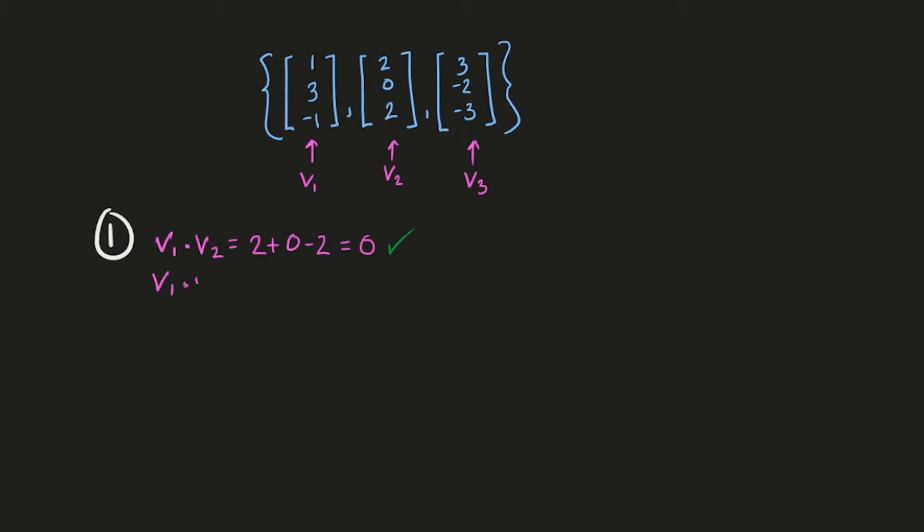Now just check them for each of the other combinations. So v1 and v3 here, and then v2 and v3. Each of these are also equal to 0, so this is pairwise orthogonal.